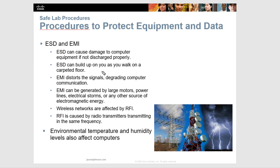The other type is EMI, or electromagnetic interference. EMI distorts the signal and degrades computer communication. It can be generated by large motors, power lines, or other sources of electromagnetic energy. Another area is RFI, or radio frequency interference, which can affect wireless networks and can be caused by radio transmitters operating in the same frequency.